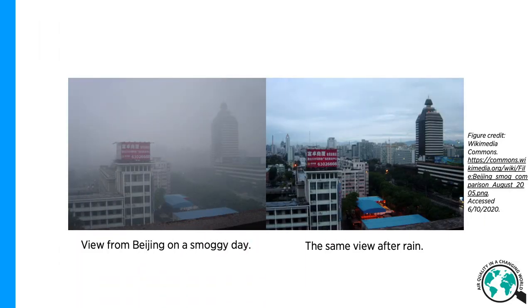In this lecture we will go through some of the basic weather phenomena and how they affect air pollution. Here is a view from Beijing on a smoggy day and then the same view after rain. The precipitation has cleaned the atmosphere — the water droplets falling from the sky have removed largely the air pollutants from the air. This implies weather phenomena have significant effects on air quality.